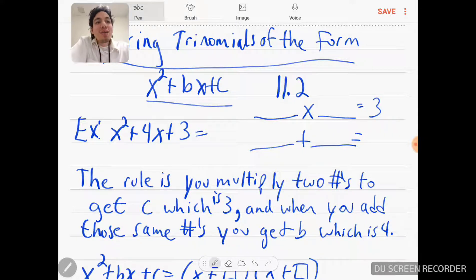When you multiply them you get c, which is the last number, which is 3. And then when you add those same two numbers, they give you positive 4, which is exactly what the rule says here. The rule is you multiply two numbers to get c, which is 3, and when you add those same numbers you get b, which is 4.